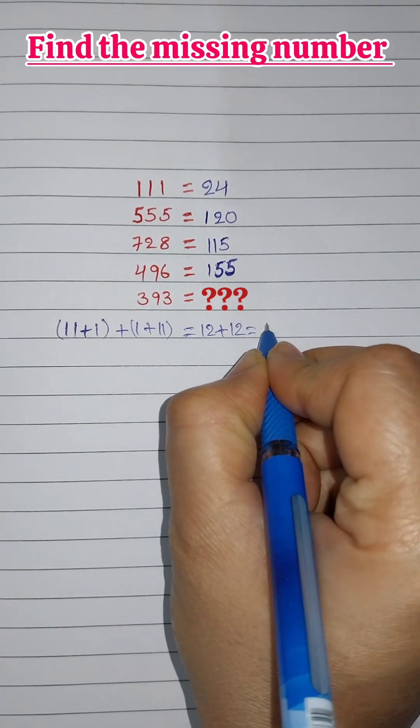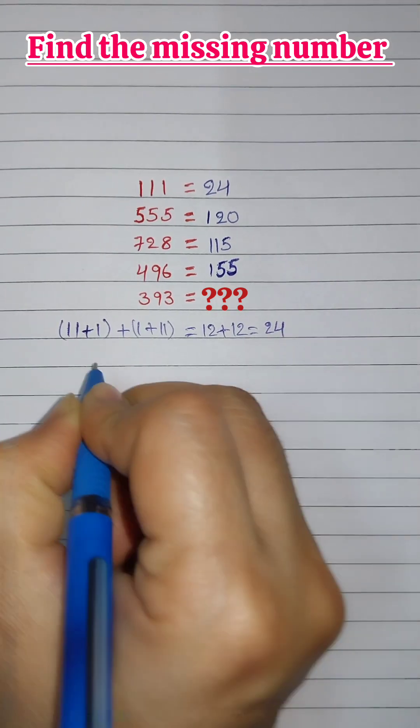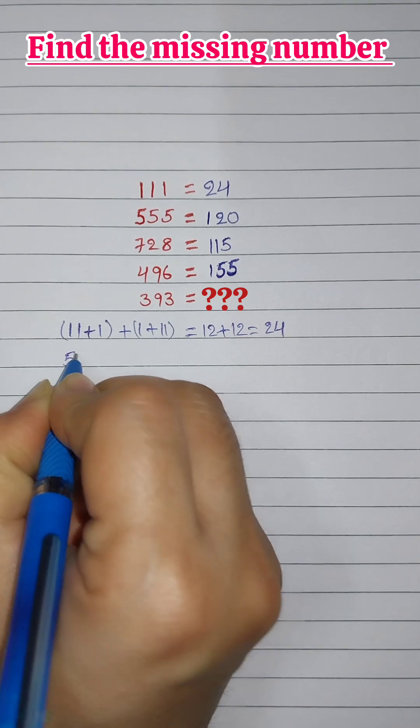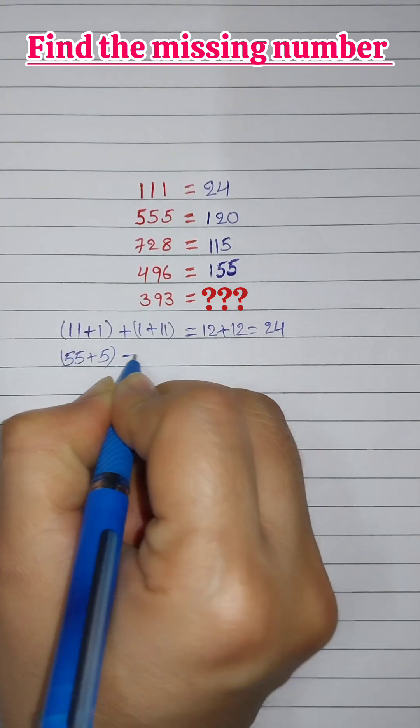Okay, alright, time up. Let's solve it together. For 111, 11 plus 1 plus 1 plus 11 equals 12 plus 12 equals 24.